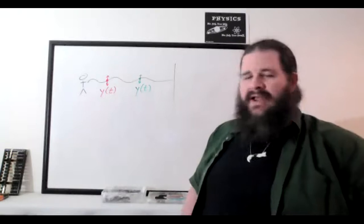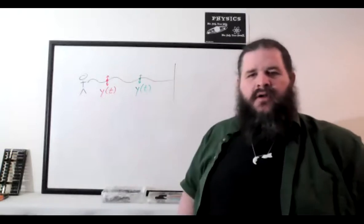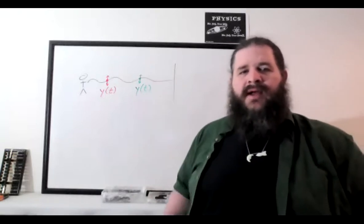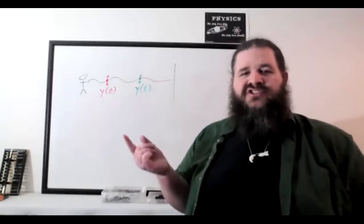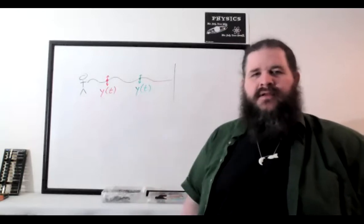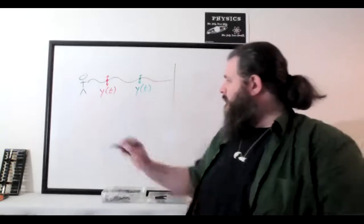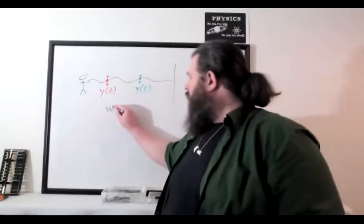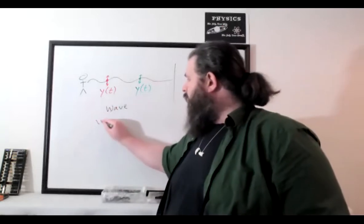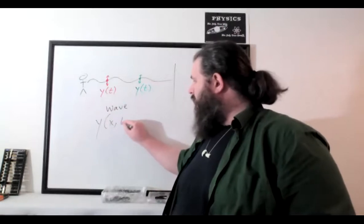We need to keep track of x. X is talking about how far along the rope we're talking about, or how far through the air if we're talking about a sound wave. X represents position in the medium — position in terms of how far the wave has traveled. So y depends on the location and what time it is. You need both of those in order to keep track of a wave.